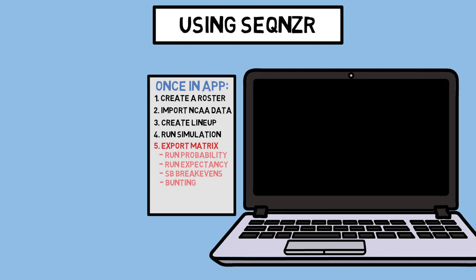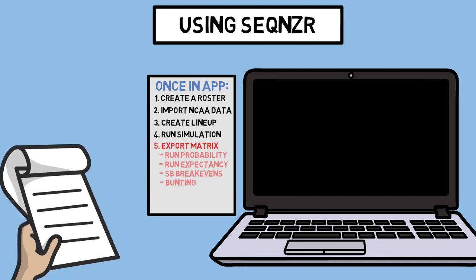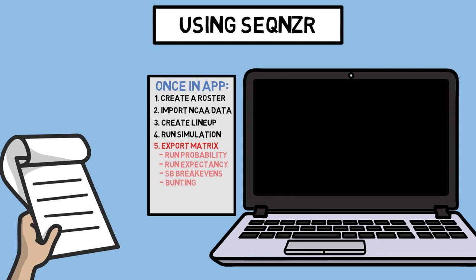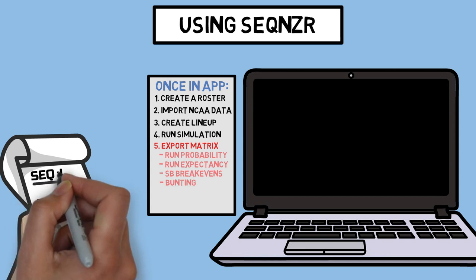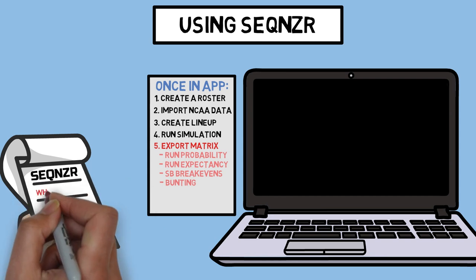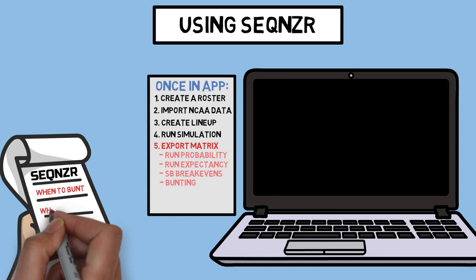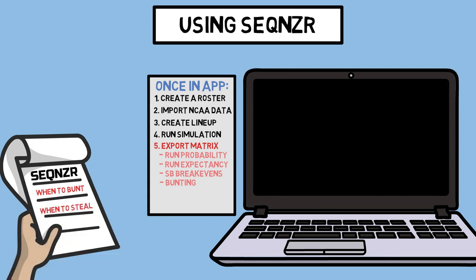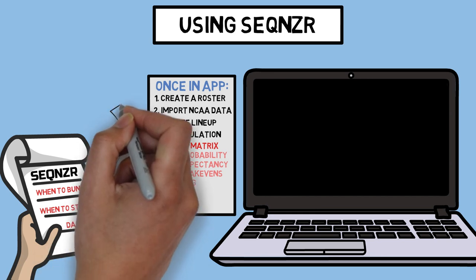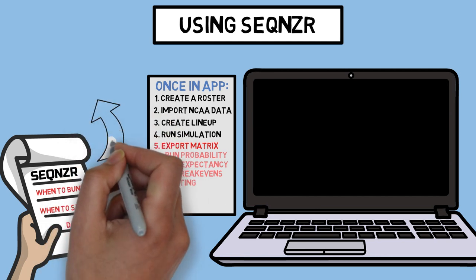Alright, we made it through all of the awesome new tools Sequencer has to offer. Just to review, Sequencer not only allows you to make better informed decisions on the best lineups you can put together, but it also can help you make real-time coaching decisions on when the best times are to bunt to increase your odds of scoring a run, as well as what situations you should steal in. And it does all of this by using data — how cool is that?